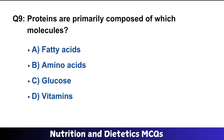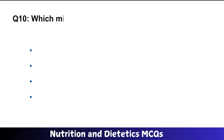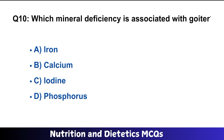Question number nine: proteins are finally composed of which molecules? B is the right option: amino acids. Question number ten: which mineral deficiency is associated with goiter? C is the right option: iodine.